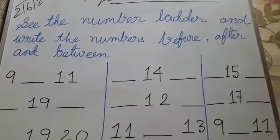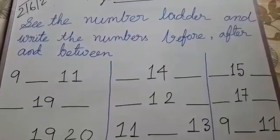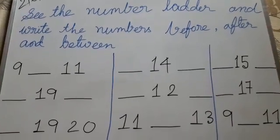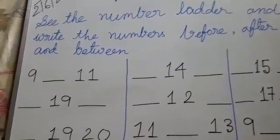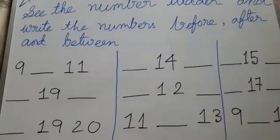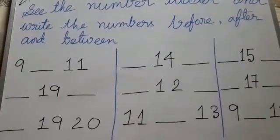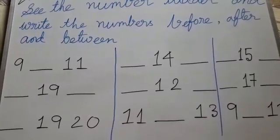Now in page number 26 only there is one number ladder. You have to follow that number ladder and fill in the blanks. In the blanks you have to do between numbers, before number as well as after number. See first there is 9-11. What will you write there? Yes, after 9 it is 10.